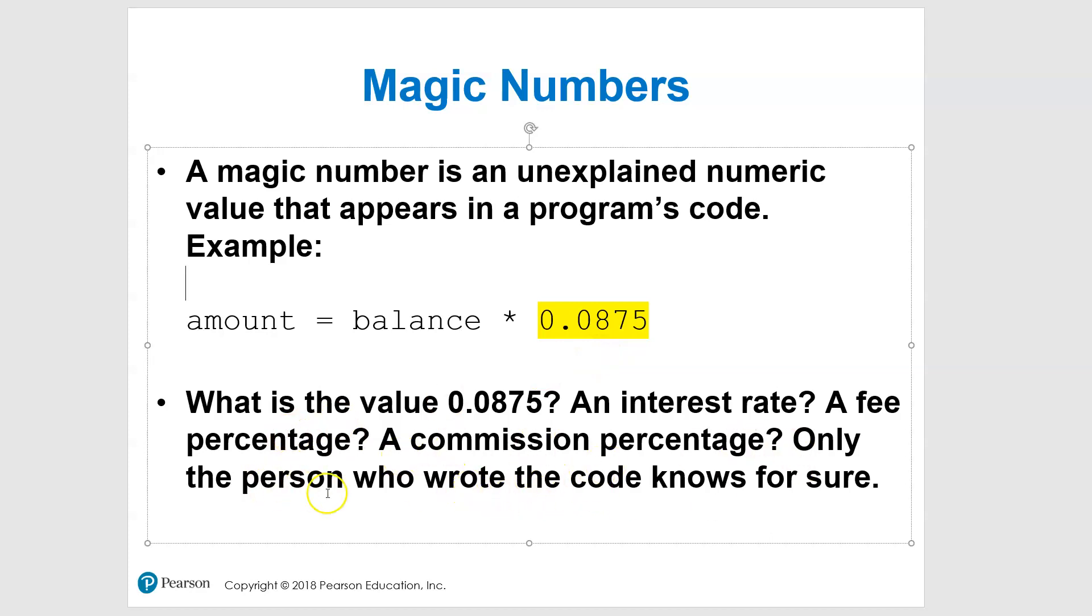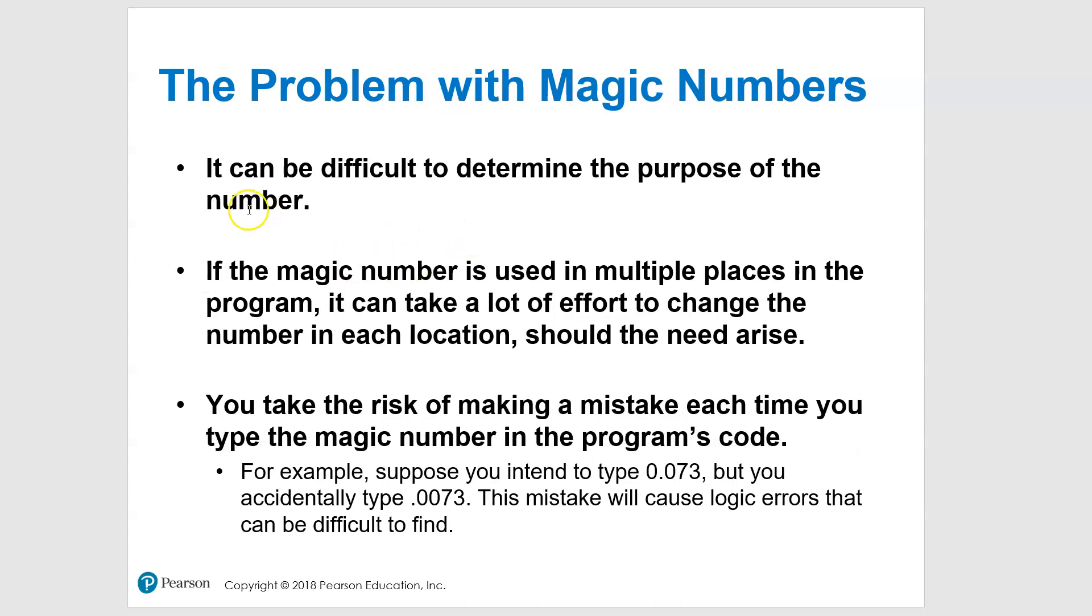Stay away from magic numbers. A few things about this: it's difficult to determine the purpose - you don't know what it is if you're looking at this code. If it's used in multiple places in the program, it takes a lot of effort to change it, and you can skip one. Maybe you have it listed in three places and you change it in two of them - you don't even notice, and maybe it causes a logic error.